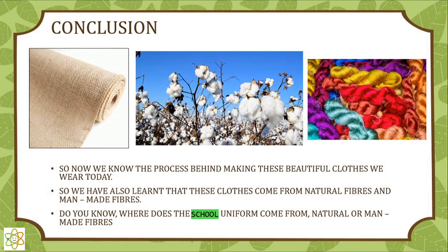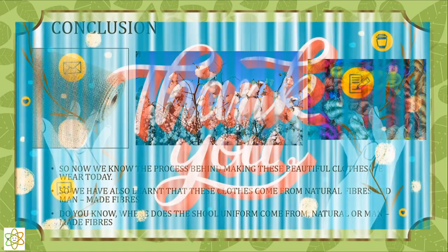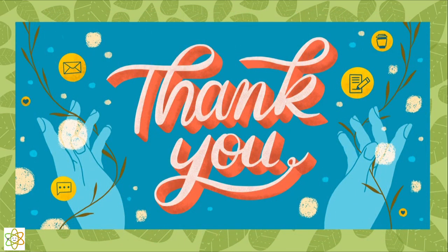Let's get to the conclusion. Now we know the process behind making the beautiful clothes we wear today. We have also learned that these clothes come from natural fibers and man-made fibers. Do you know where your school uniform comes from — natural or man-made fibers? Yes, our school uniform comes from cotton fibers, which is natural. Thank you, I hope you enjoyed. Please like, share, subscribe, and click on the notification bell so you'll be the first to see our videos. Bye!